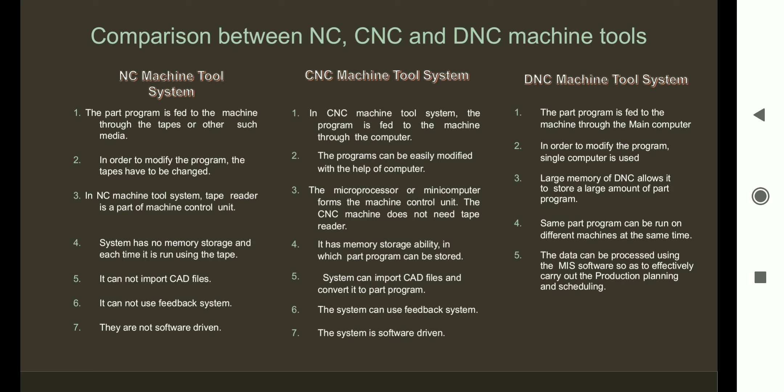In an NC machine tool system, it cannot import CAD files, simply because it has no computer. In a CNC machine tool system, it can import CAD files and convert them into part programs. In a DNC machine system, the data can be processed using MIS software so as to effectively carry out production planning and scheduling. In an NC system, it cannot use a feedback system; but in a CNC system, the system can use a feedback system. NC machine tool systems are not software-driven, whereas CNC machine tool systems are software-driven. These are the basic differences among NC, CNC, and DNC systems.